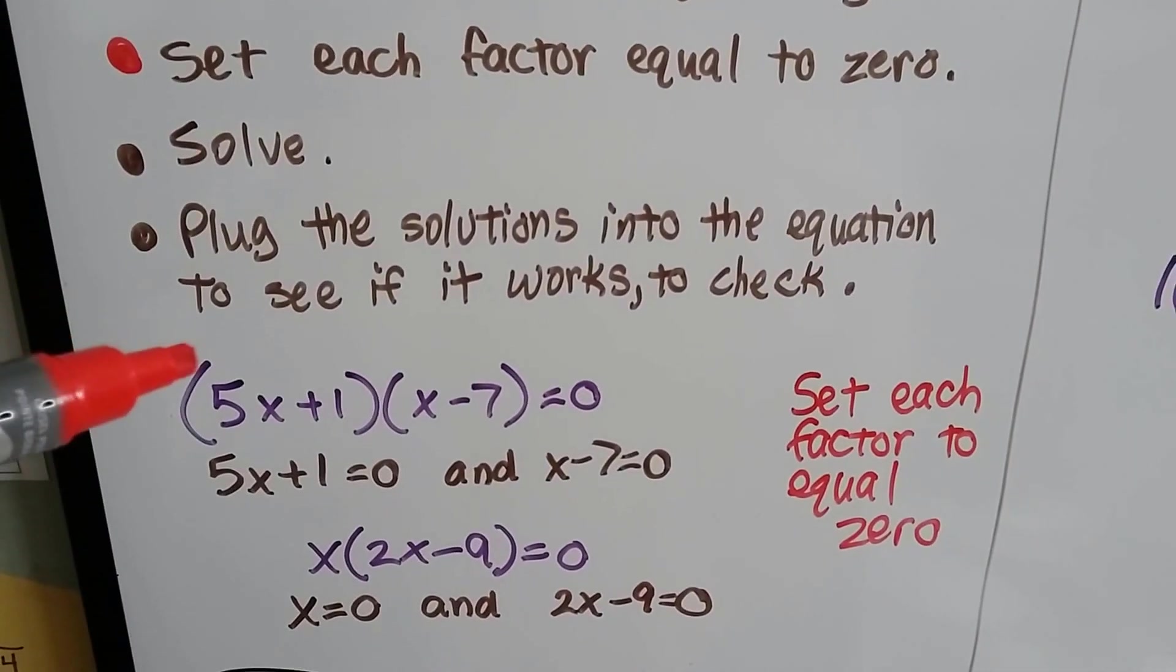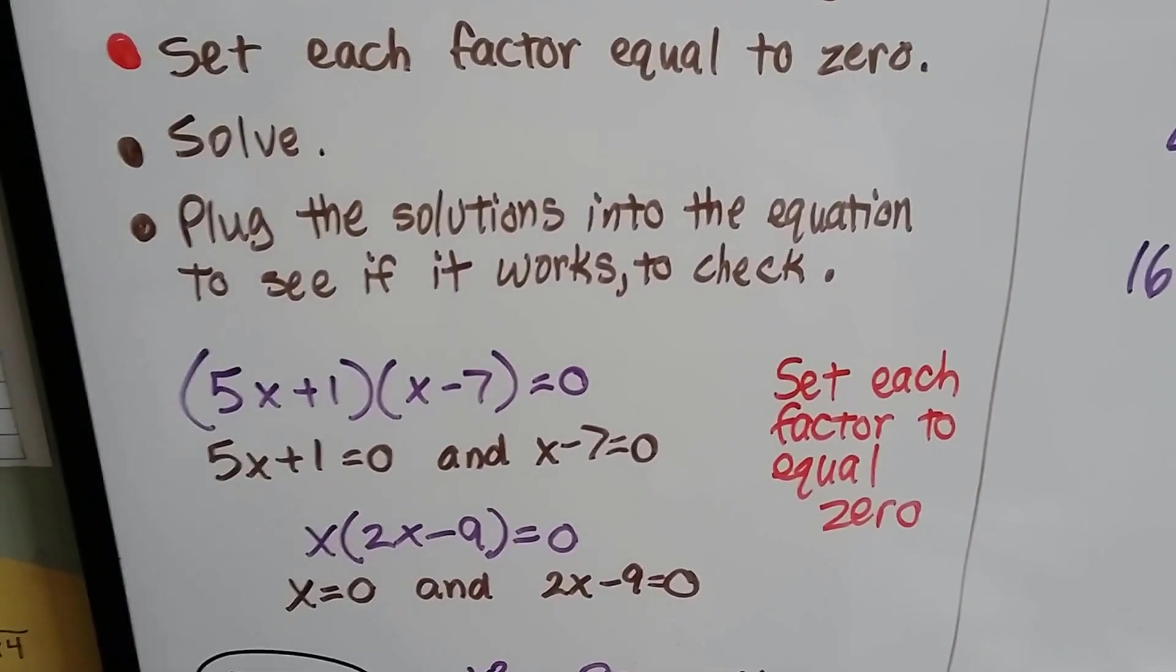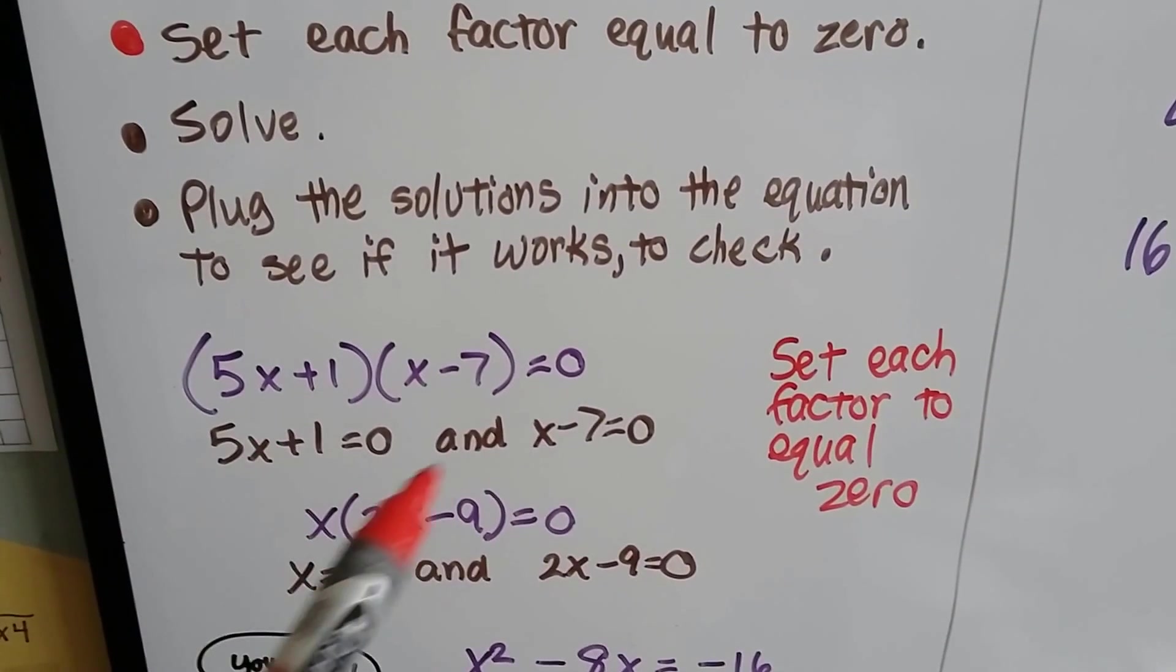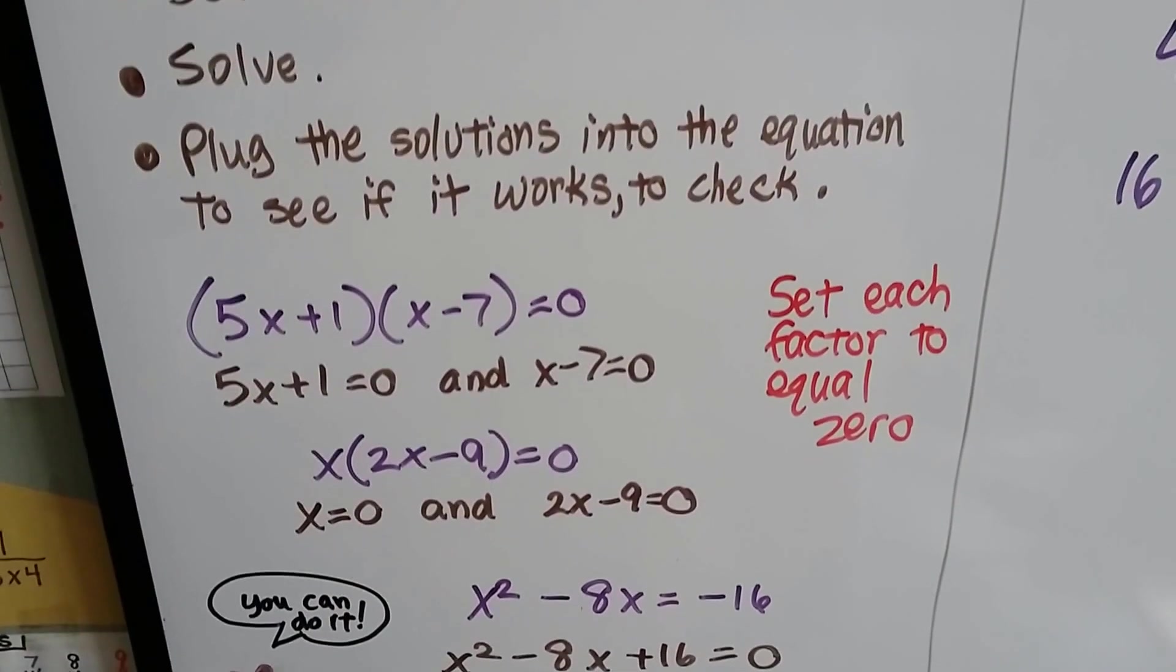So if we get two binomials that equal zero, we rewrite them so they each equal zero and then we solve them separately.